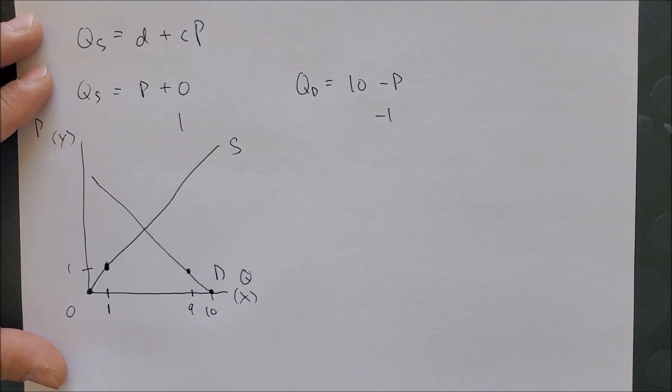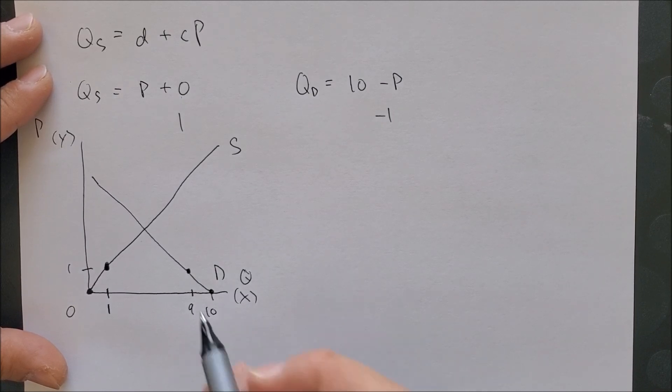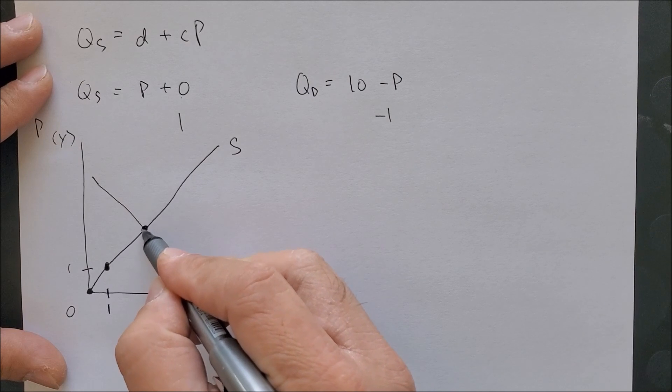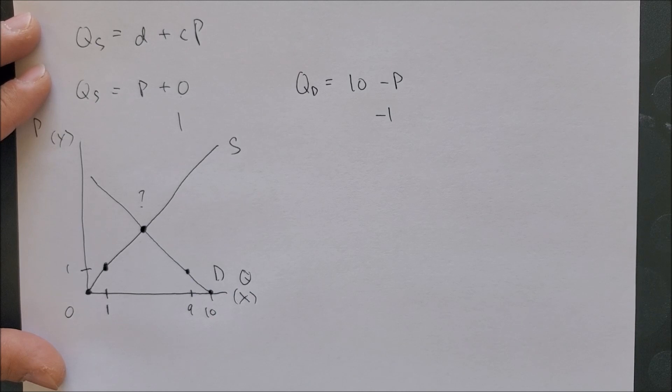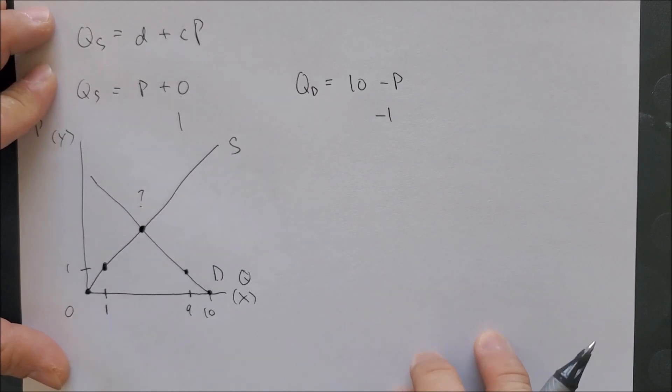Lo and behold, we now have our market. However, the question is: at what point do both demand and supply intersect? We could look at the graph and maybe guess, but that may not be the best way to do so.